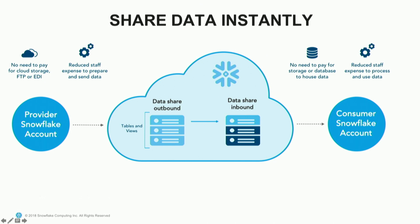How does this work? The provider in their Snowflake account will create a share, choose what they want to share — whether tables or secure views — and publish it, adding consumers to that share. On the consumer end, you'll see a list of inbound shares that you can create a database from, just like any other database inside your warehouse, and it's immediately queryable. If you have multiple consumers, you only have to manage one database, and based on security measures, you can give each consumer access to their own slice.